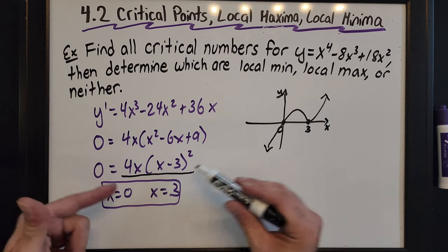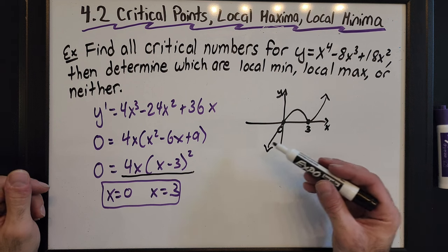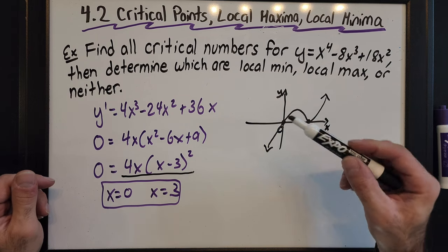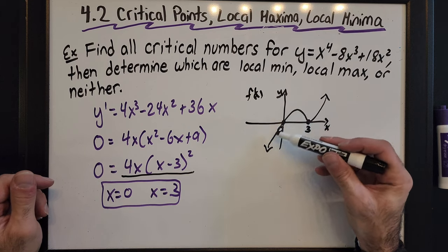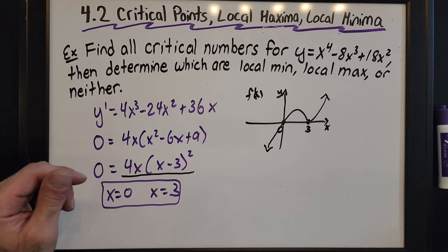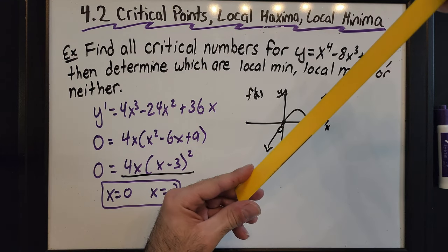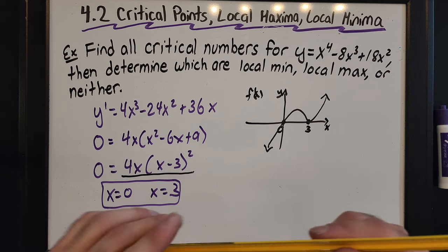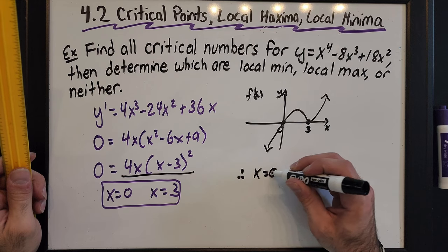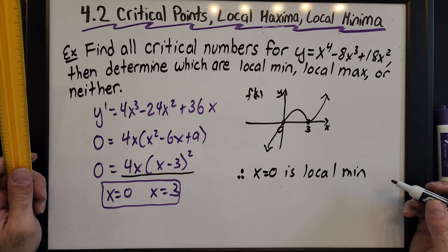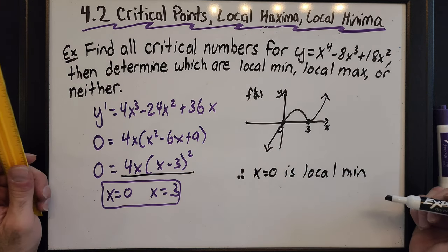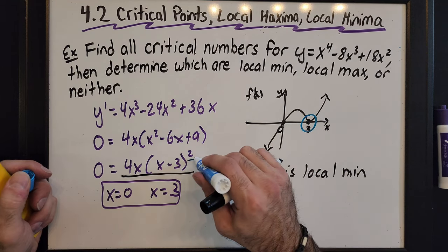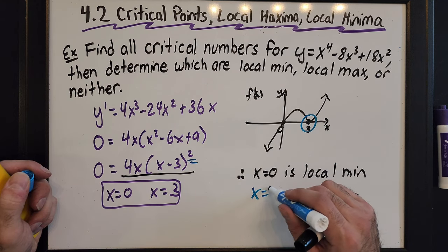It goes through zero and bounces off at three. We should know how to sketch this from advanced functions. With this rough graph, we just need to know where the first derivative is changing from positive to negative. Where f prime changes from negative to positive, that's a minimum. So I can confirm there's a local minimum at x equals zero. At x equals three, the interval is not changing from positive to negative — it bounces off because of the squared factor.